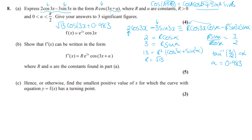Part b: show that f′(x) can be written in a given form. f(x) = e^(2x) cos(3x) is a product of two functions, so we use the product rule. Each factor is also a function of a function, so the chain rule is needed too. f′ = e^(2x) · (−3sin(3x)) + 2e^(2x) · cos(3x). Taking e^(2x) as a common factor gives e^(2x)(2cos(3x) − 3sin(3x)).